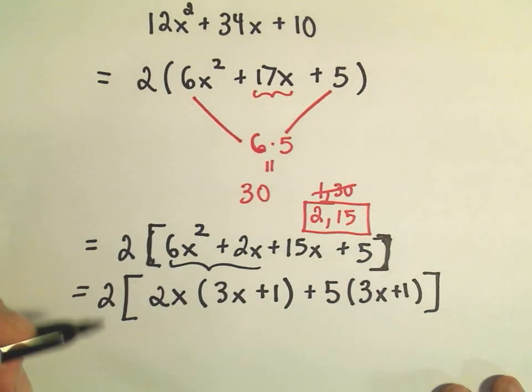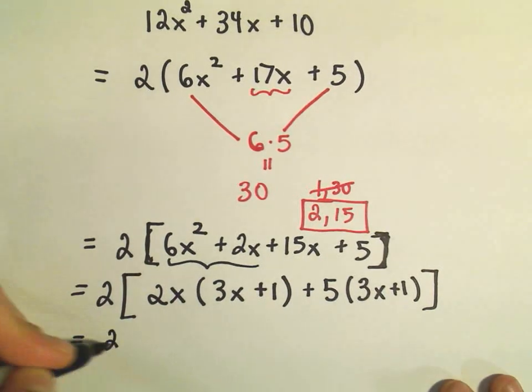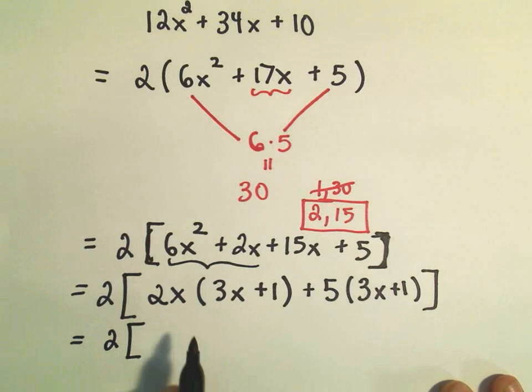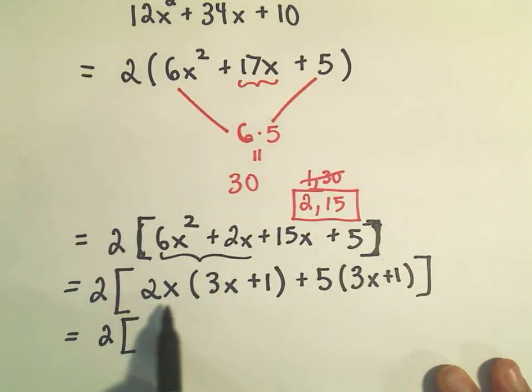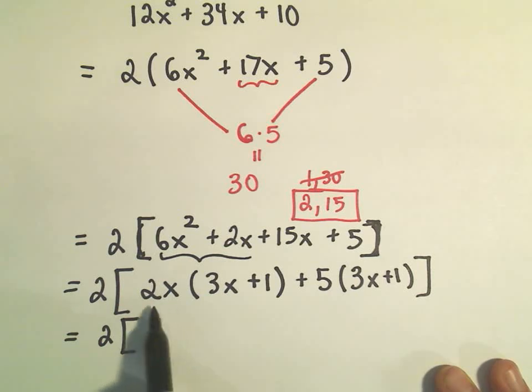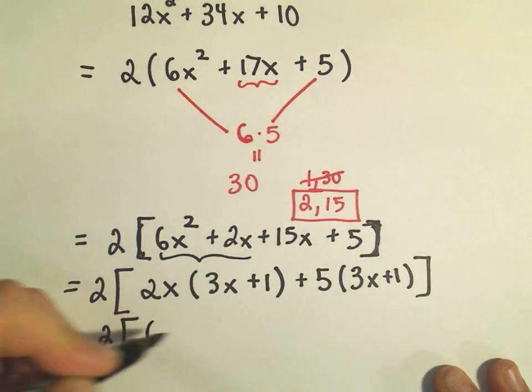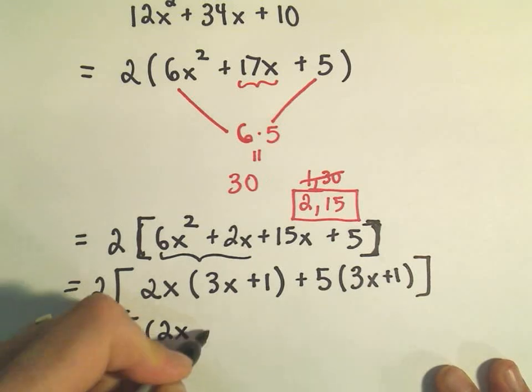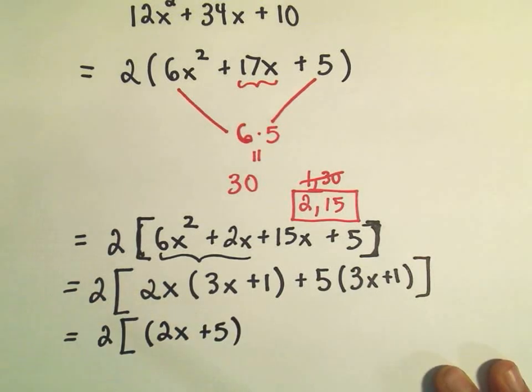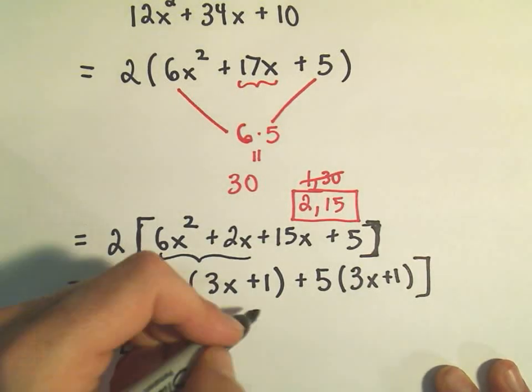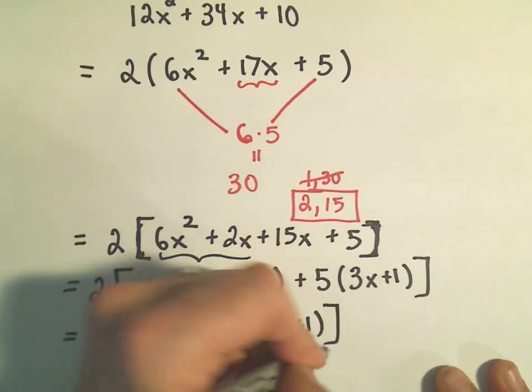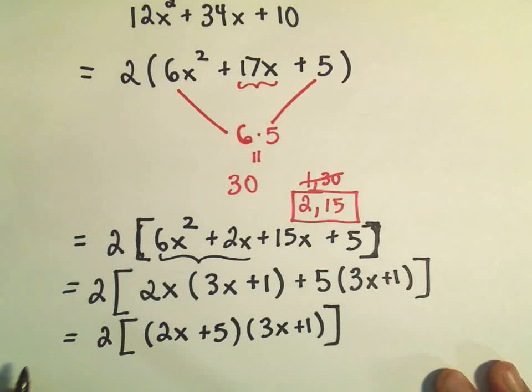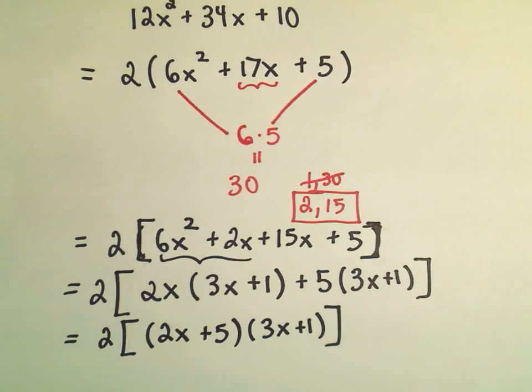There's our 2 still hanging out front. Remember, when you do factoring by grouping, whatever's in front of the parentheses, we stick that in a set of parentheses. So I'm going to put my 2x and my positive 5 in one set of parentheses. And then we have our 3x plus 1, this common factor. We stick that next to it, and now we have it factored.